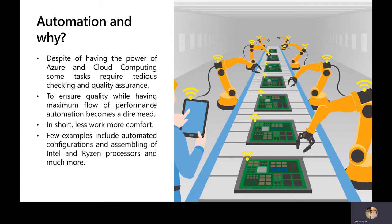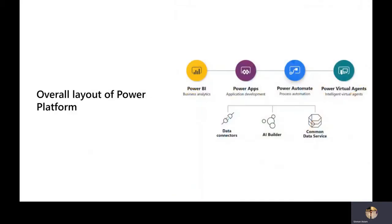A great example of automation in action is how Intel and Ryzen processors are manufactured. The image shown here depicts how robotic machines are automated to build different processors and chips. This is why automation is a key tool for providing quality work and removing human effort from these task processes.